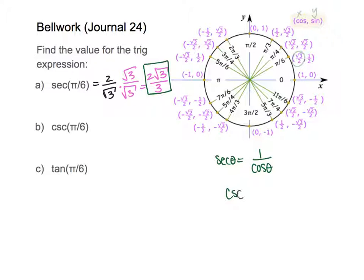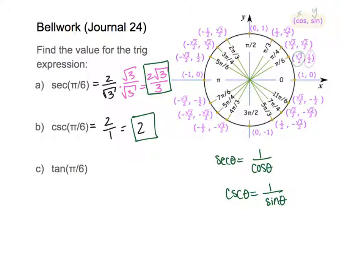So if I wanted cosecant, that's related to sine, so it's 1 over sine. If I go to sine of pi over 6, that's this value here — it's 1 half. If I flip it, that's just going to be flipping 1 half, which is 2 over 1, which is just the value of 2. So cosecant of pi over 6 is just 2.